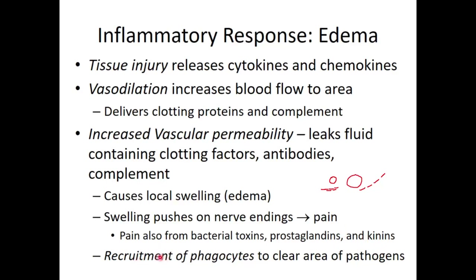The inflammatory response also recruits phagocytes — neutrophils and macrophages — to clear the area of pathogens. An important note: if tissue doesn't have macrophages, the tissue won't heal. Neutrophils are important, but if they're absent the body can still heal. Macrophages must be present for the damaged or inflamed tissue to heal.